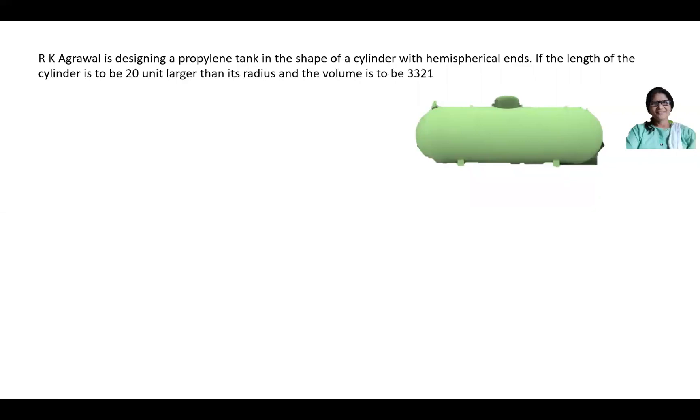Read the question very carefully. R.K. Agarwal is designing a propylene tank. The figure is given in the shape of a cylinder with two hemispherical ends. If the length of the cylinder is to be 20 units larger than its radius, and the volume is to be 3321π cubic unit, then what is the radius? Options are given: 5 unit, 7 unit, 9 unit, 13 unit.